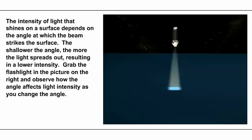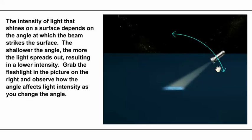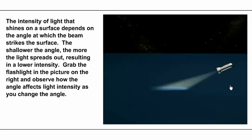If we change the angle of our flashlight and make the light come in at a lower angle and strike the surface, the light now gets spread out over a larger area. So the amount of light per unit area is now lower and the light is dimmer on the surface — it's not as intense. Even though the same amount of light is coming out of the flashlight, it's dimmer on the surface because of the lower angle.